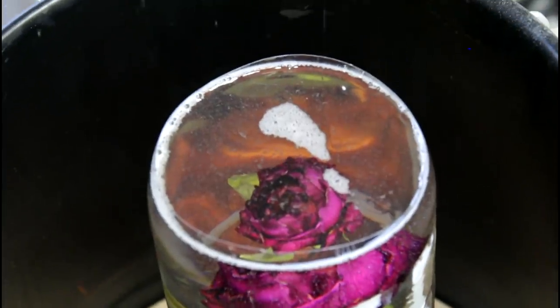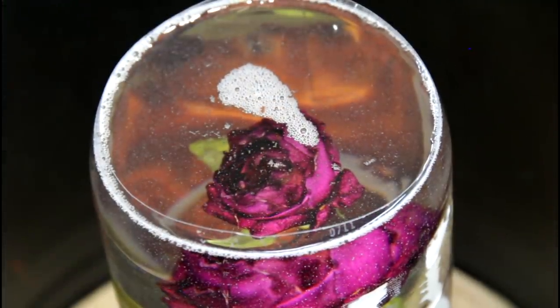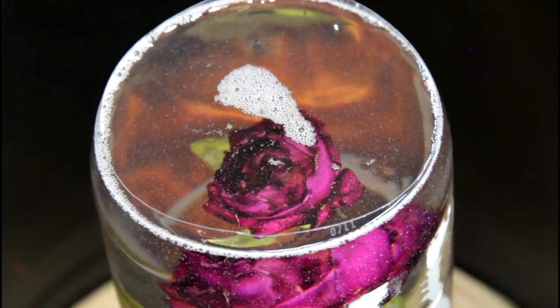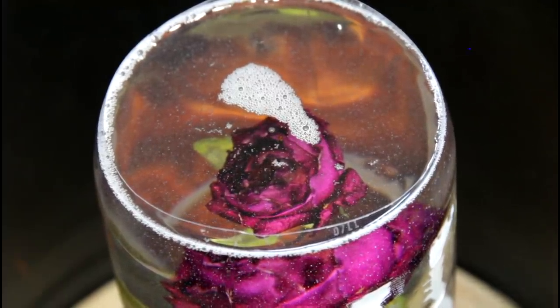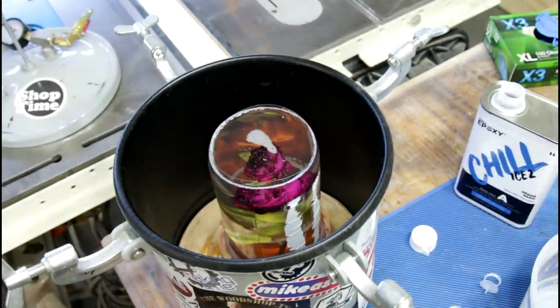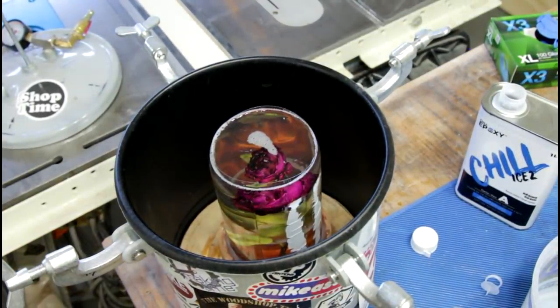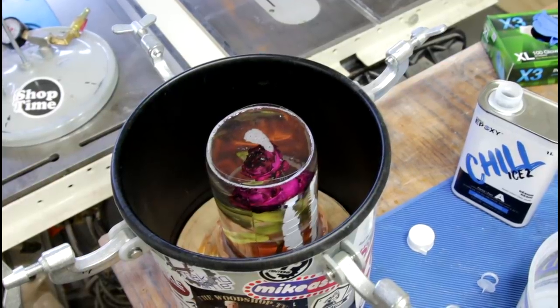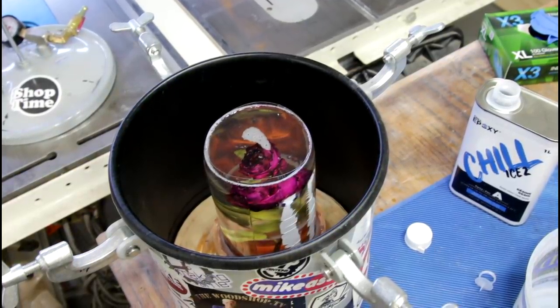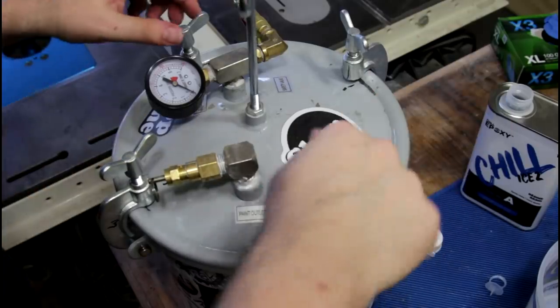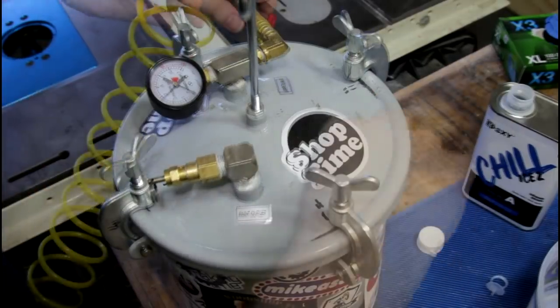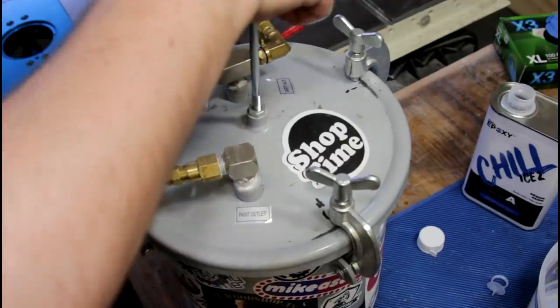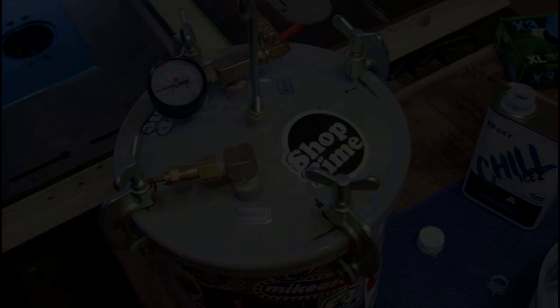That is right up to the rim. We have 8 ounces left in our mixing cup, which means we have 52 ounces of resin in this pot. 52 ounces of resin in a small space like this should absolutely overheat. I don't even know if this stuff will work in a pressure pot. And that's all there is to it.